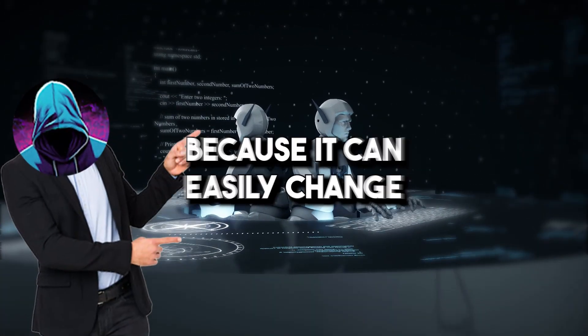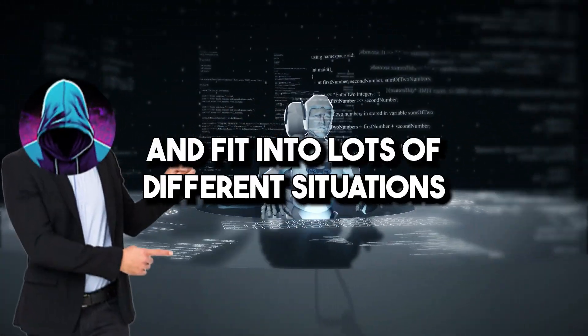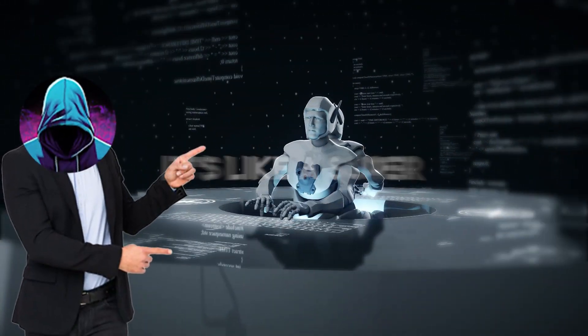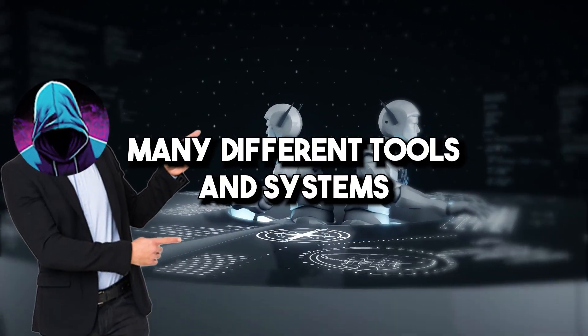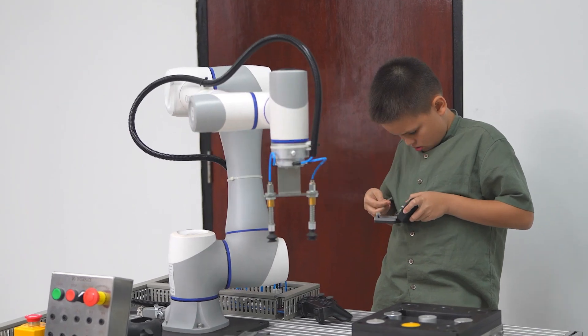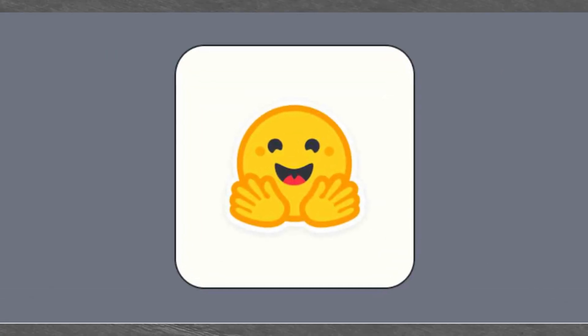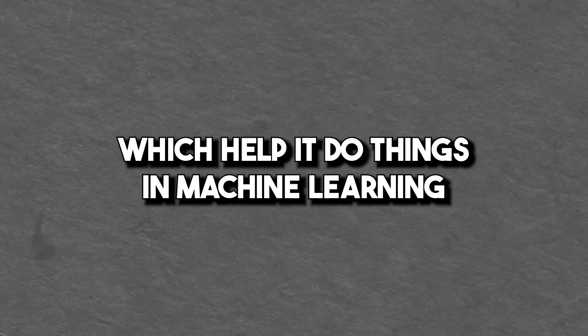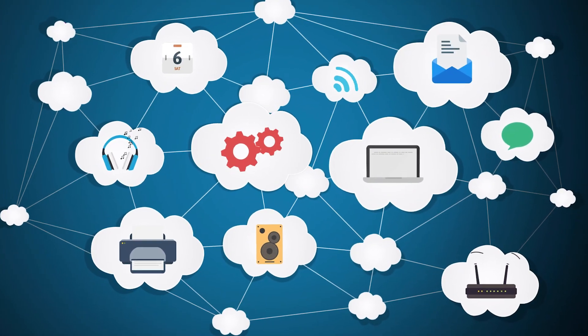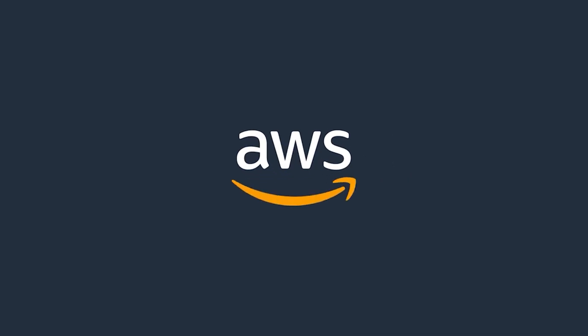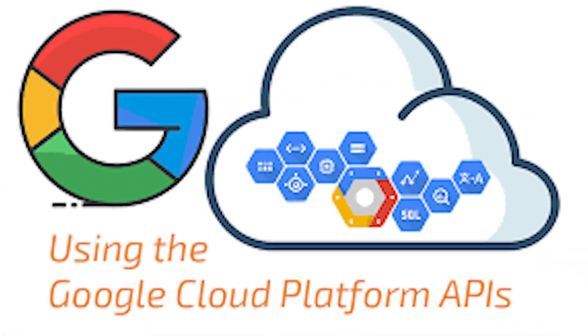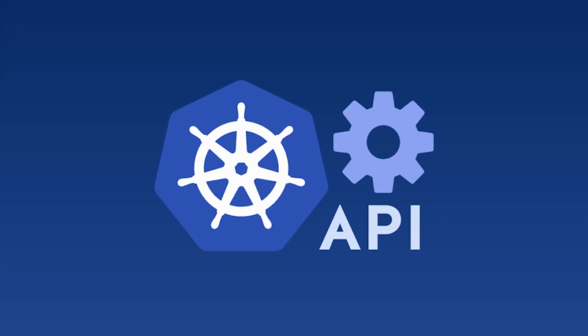Gorilla AI is really unique because it can easily change and fit into lots of different situations. It's like a super smart person who can work with many different tools and systems. It's really good at using all kinds of things like the Torch Hub, TensorFlow Hub, and Hugging Face APIs, which help it do things in machine learning. Even big things like cloud services are no match for Gorilla AI's skills. It can handle stuff like AWS's GCP and Kubernetes APIs easily.